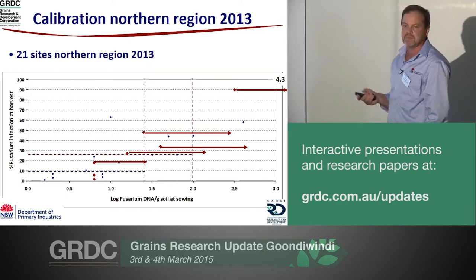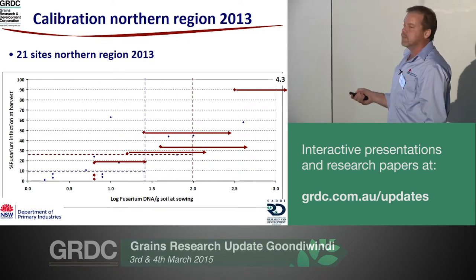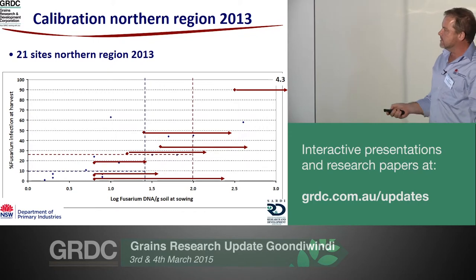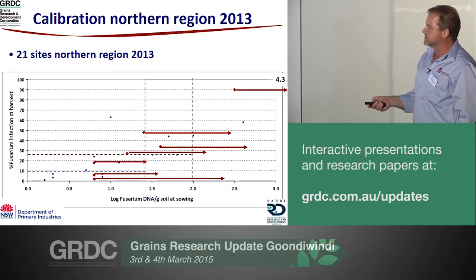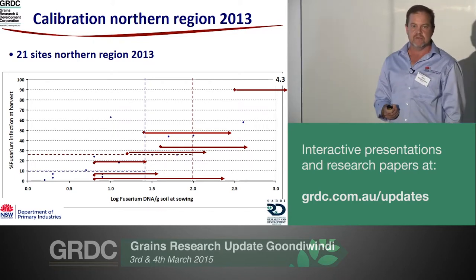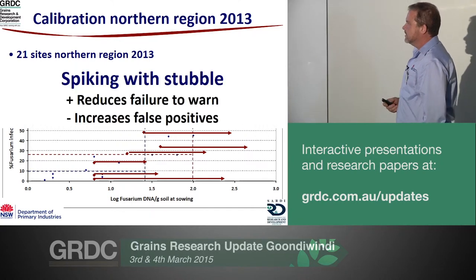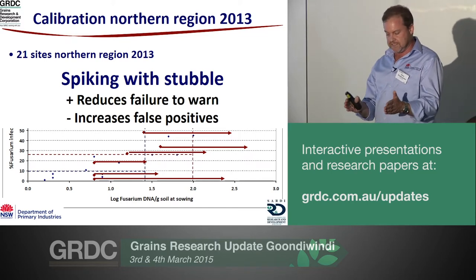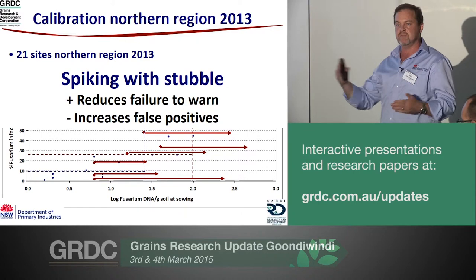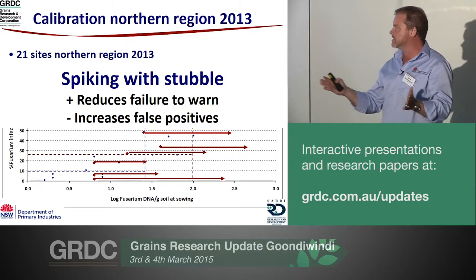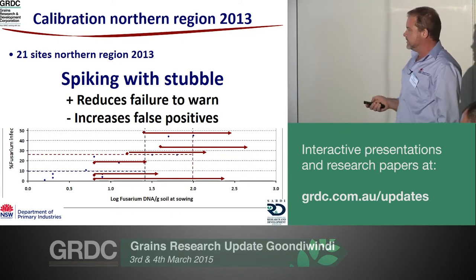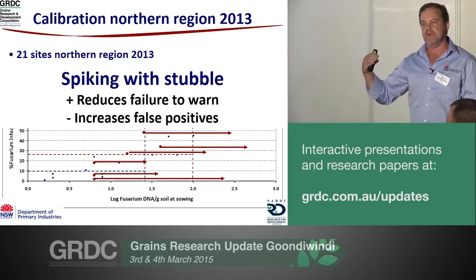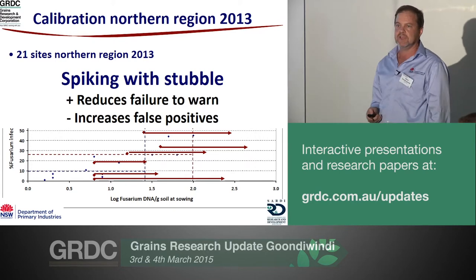Where we put set bits of stubble in with the soil test and sent them off, the arrows show where the log DNA value moves to. Where we could spike, we've pushed some samples into the medium risk category — which matched the medium infection level actually observed — and corrected the underestimates. So spiking reduces failures to warn, but it also increases false positives. Down at the bottom, two samples ended up with low infection levels but we pushed them into moderate and high risk categories — that's a false warning. This has been done nationally across about 196 NVT sites in 2014.